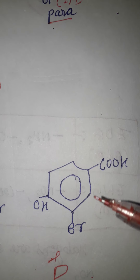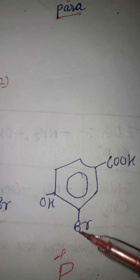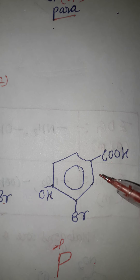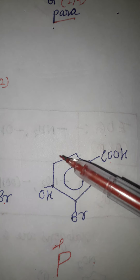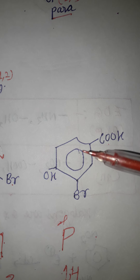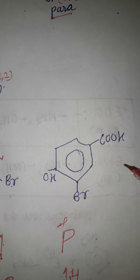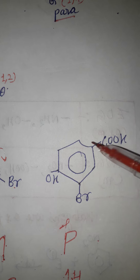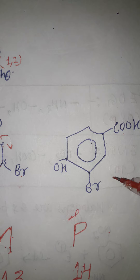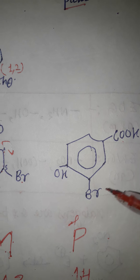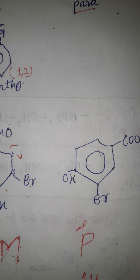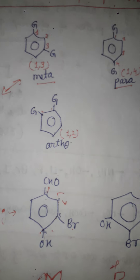Now here is another example: a CHO group, a bromine, and an alcohol group are given on the benzene ring. You have to give the number and identify the name of this compound. This is an assignment for you — write down your answer in the comment section with the correct name of this compound.